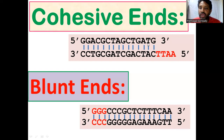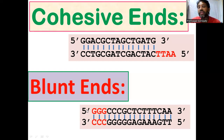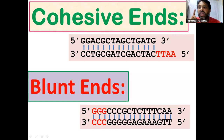When it comes to blunt ends, both strands are equal in size. The end is having two strands of equal length. There are no single-strand, overhanging, unpaired nucleotides. Hence, they are called blunt ends. Blunt ends are equal in length, whereas cohesive ends are not equal in length.